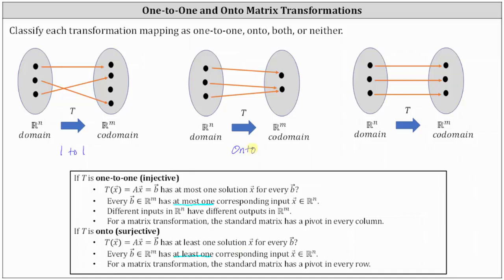Now looking at the third mapping, notice how each of the vectors in our M has exactly one corresponding input vector in our N. This meets the requirement for both a one-to-one and onto transformation. Each vector in our M having exactly one corresponding input does meet the requirement of having at most one, as well as at least one. This last transformation is one-to-one and onto.